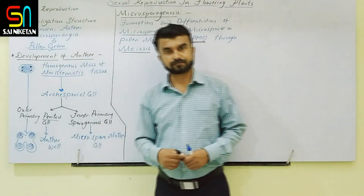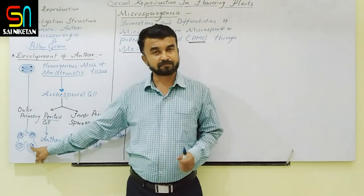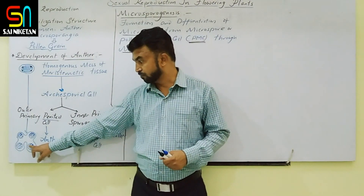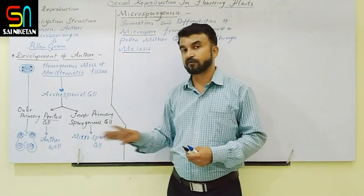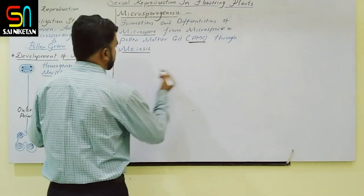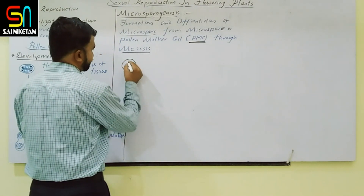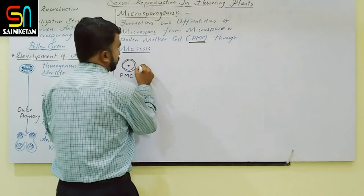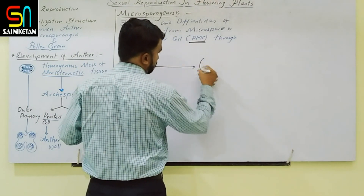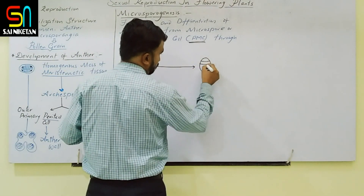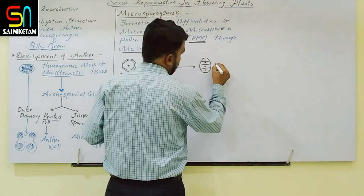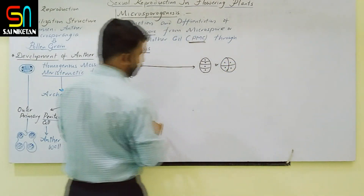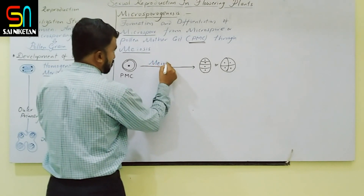Microsporogenesis occurs inside the microsporangium. Inside the microsporangium, microspore mother cells — also called pollen mother cells — are present. These microspore mother cells undergo meiosis inside the microsporangium. From each microspore mother cell, four microspores are produced through meiosis.